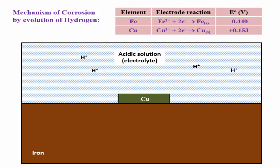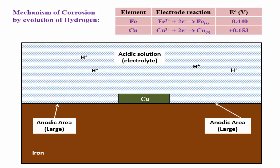As per the galvanic series, iron is present at the top of copper. Hence, iron will act as anode and copper will act as cathode. Thus we can see a large anodic area, and this is the place where oxidation occurs.